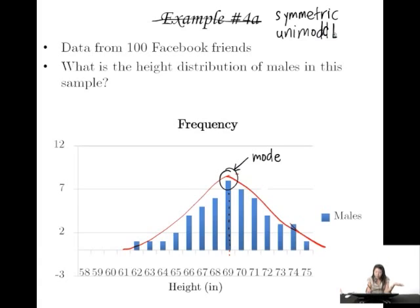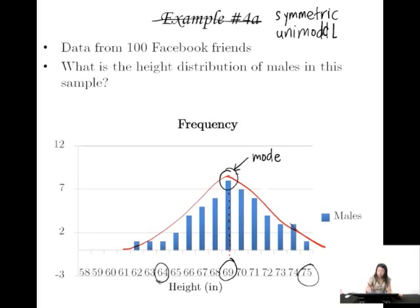What else do we notice? We don't really see a tail. Furthermore, this distribution seems to have a lot of people piled up around 69 inches, with more people close to 69 and fewer people farther away — like at 75 or around 64. This is what we call a normal distribution. By definition, a normal distribution is both unimodal and symmetrical.